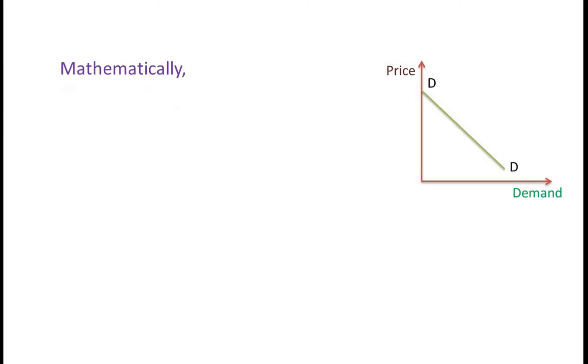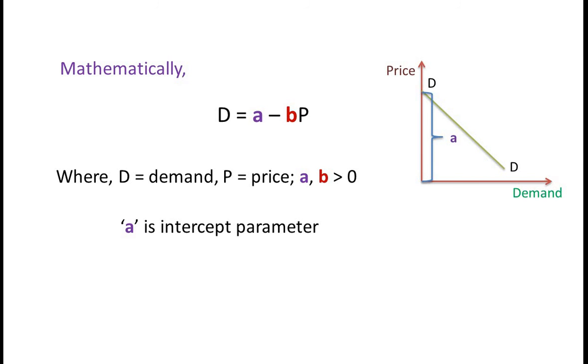Mathematically, D equals A minus BP, where D is demand, P is price, A and B are greater than zero. A is the intercept parameter and B is the slope parameter.